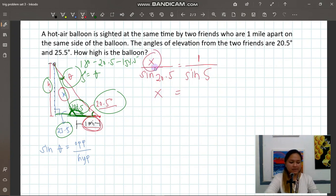So we write here sine 5. We can solve now for X. So using calculator, cross multiply - multiply this, that's 1. So basically that's sine 20.5 over sine 5. That's X. Sine 20.5 over sine 5, that's 4.02, approximately 4.02.